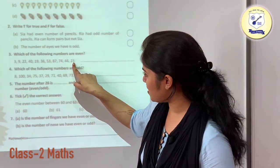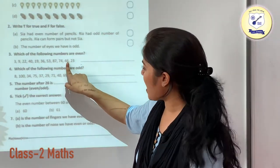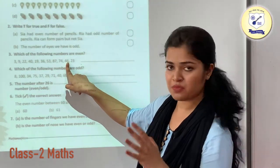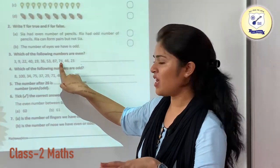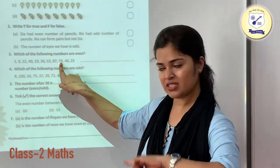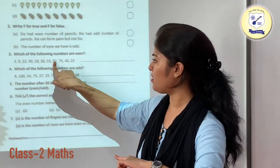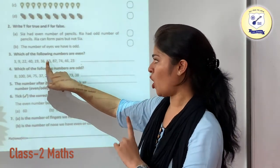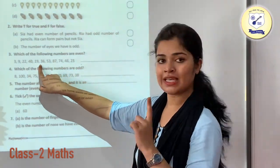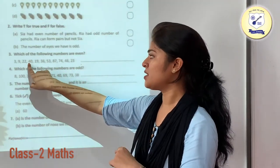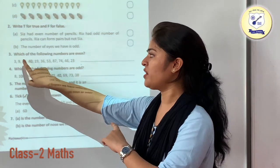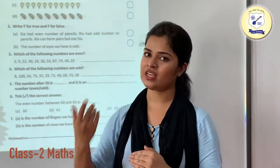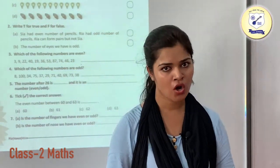Since this is 3, it is odd. We are having 6 at its ones place, so this is even. We are having 4 — this is even. Seven — this is odd. Three — odd. Six — even. Nine — odd. Zero — even. Two — even. Nine — odd. And three is again your odd.